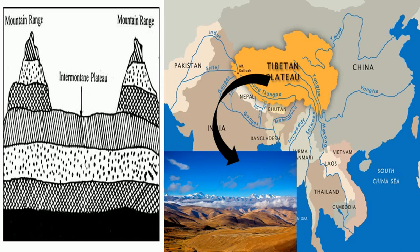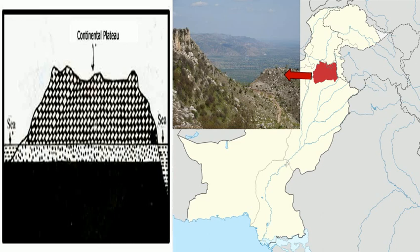Moving on to continental plateaus — these are extensive table lands which rise abruptly from the bordering lowlands or from the sea, as you can see in the image. Examples include the plateau regions of South Africa, West Australia, Peninsular India, Greenland, and Antarctica. The Plateau of Ranchi in India and the Potwar Plateau in Pakistan also belong to this type.